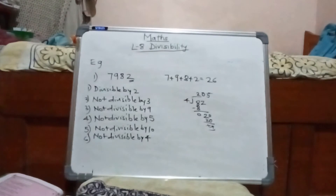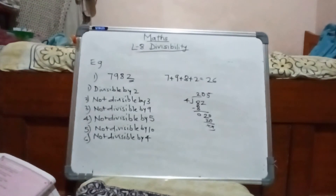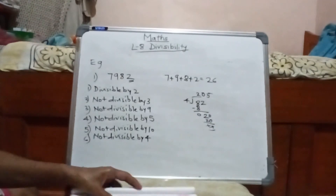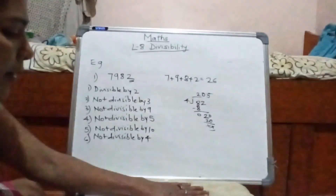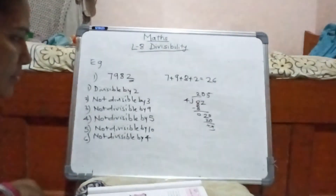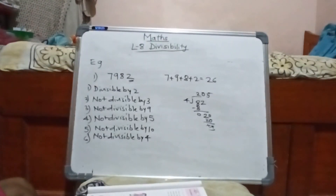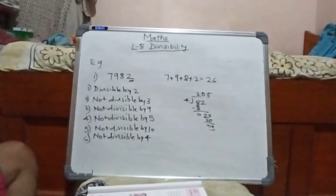Clear? Understood everybody? I hope this chapter is very easy, very short and sweet. You can now identify which numbers are divisible by 2, 3, 5, 10, 9, and 4. Thank you, students.